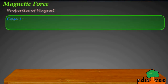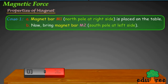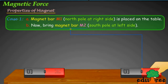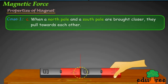Case 1: Magnet bar M1 with its North Pole at the right side is placed on the table. Now, bring magnet bar M2 with its South Pole at the left side closer. When a North Pole and a South Pole are brought closer, they pull towards each other.